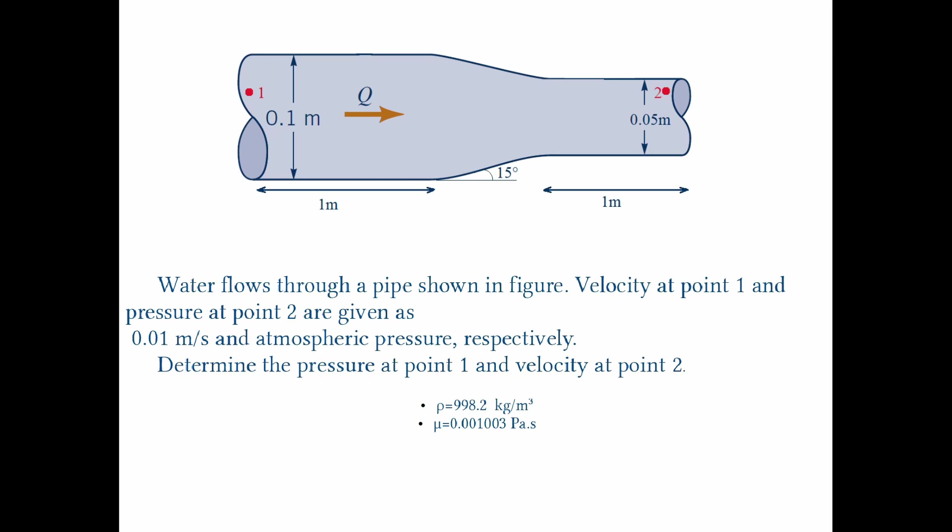Here we have a Water Fluid Venturi Reducer. The entrance velocity is 0.01 m per second, and the exit pressure is given as atmospheric pressure. We are asked to determine the exit velocity and entrance pressure.